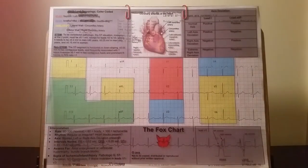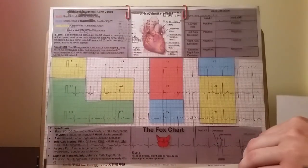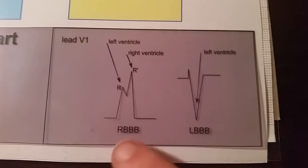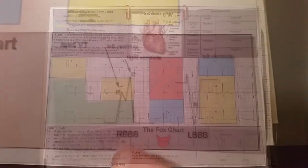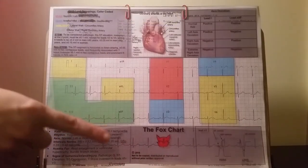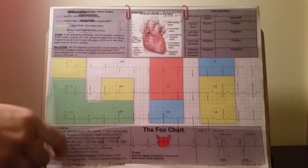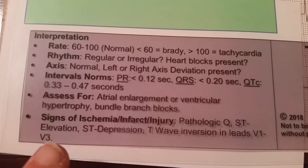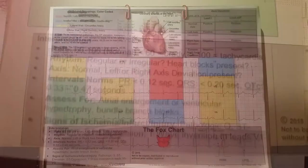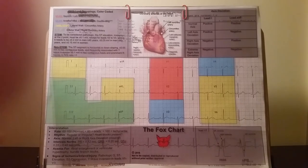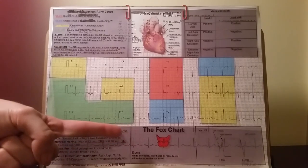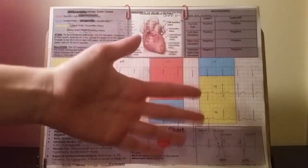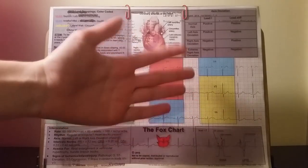In the bottom right-hand corner, there is a diagram to help with identification of bundle branch blocks. In the bottom left-hand corner are universal instructions for basic EKG interpretation. We hope you find the FOX chart easy to use and helpful while in teaching or practical application settings.